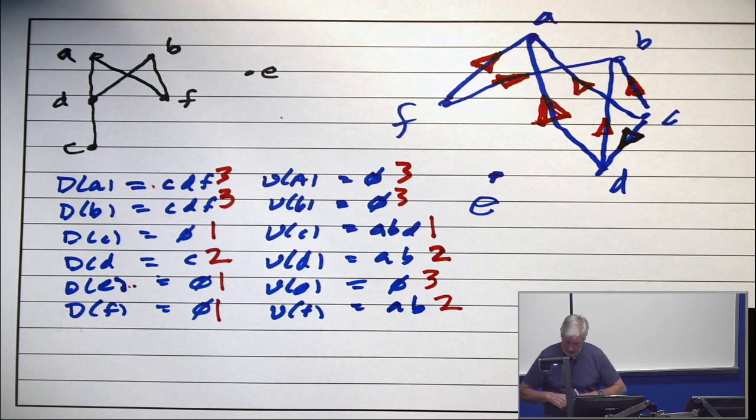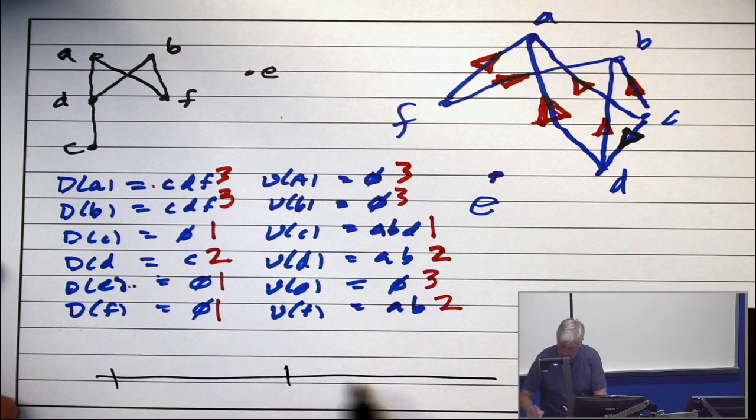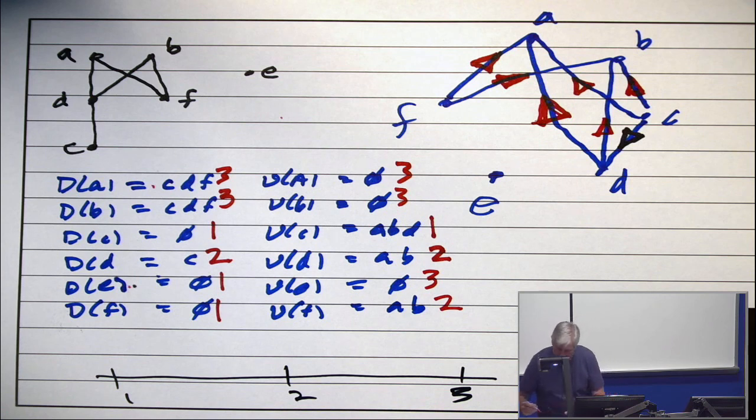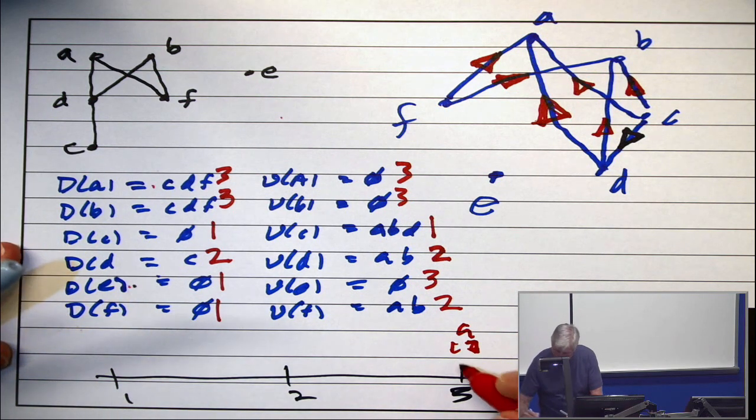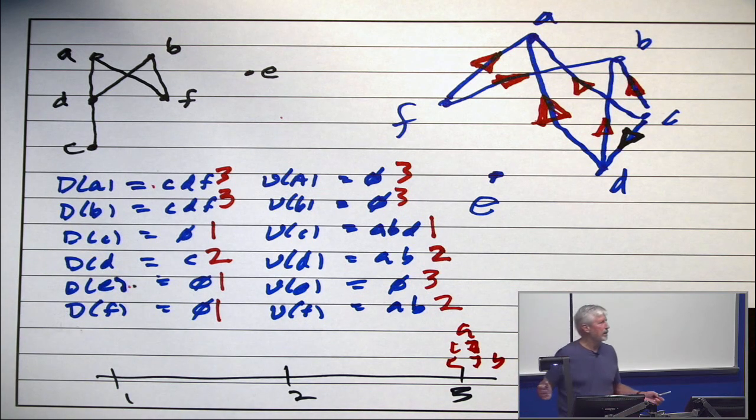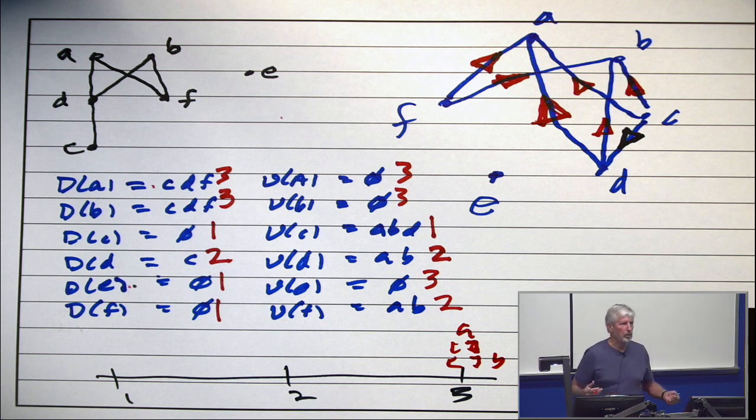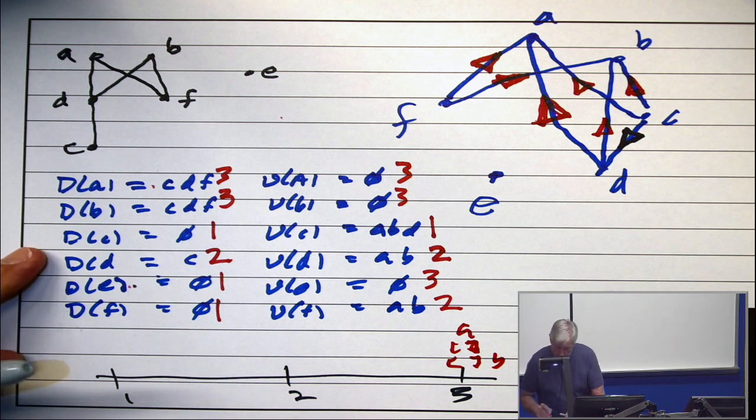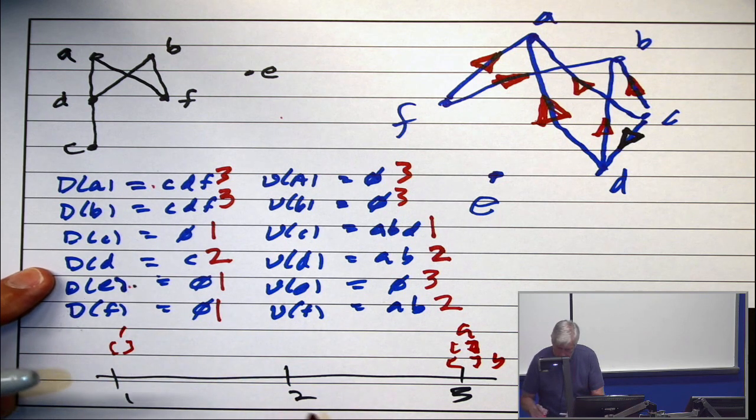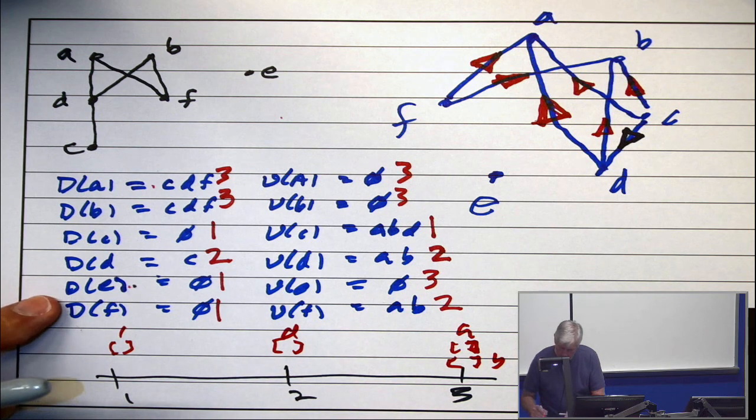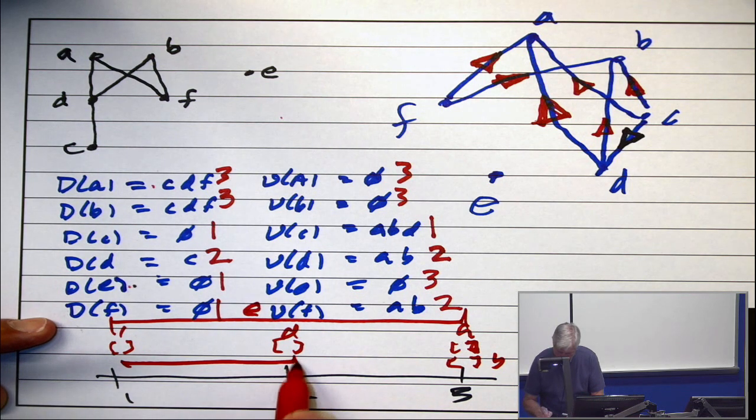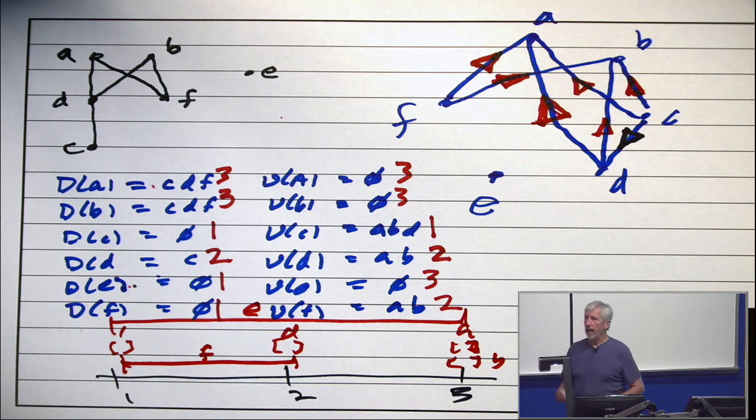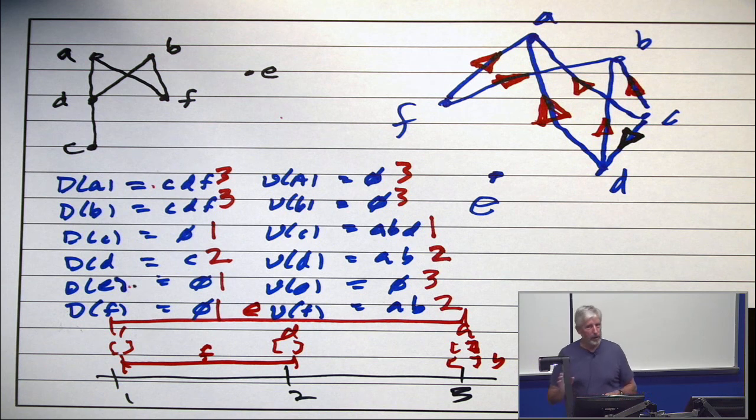So, I take my number line. It's a very simple number line. One, two, and three. And I put my intervals in there. The interval for A is three, three. The interval for B is three, three. Wait a minute. They got the same interval. That's okay. Two committees can want the same schedule. Interval for C is one, one. Interval for D, two, two. Interval for E, one, three. Interval for F, one, two. Now, that's not the picture I started with, but it gives the same information.